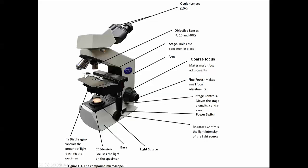There's also a condenser on the base of the stage. The condenser focuses light from the light source onto the specimen. It also contains a small lever that controls the iris diaphragm, which controls the amount of light actually passing through to the specimen.